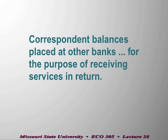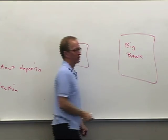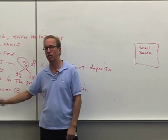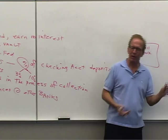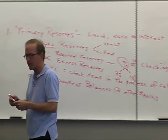The third component of primary reserves is correspondent balances at other banks. Usually — but not always — there's a small bank that goes to a bigger bank and asks for help with certain services it cannot efficiently produce in-house.